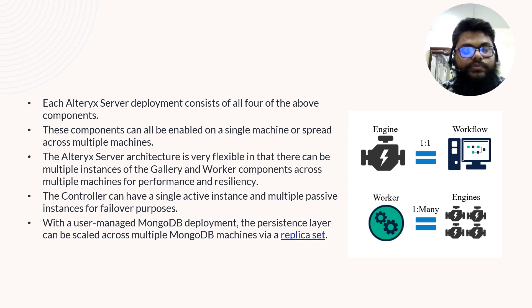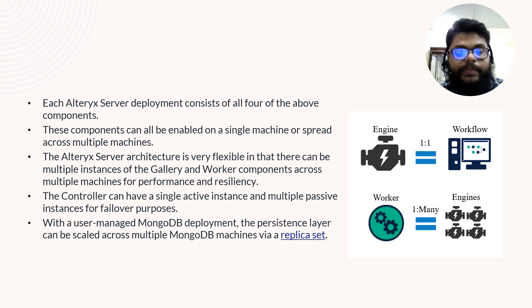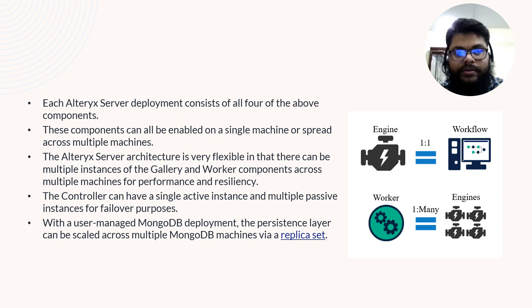Next, let's look at the Controller. For one server there will be one active Controller. The Controller is like the active server — whenever we connect to Alteryx Gallery it must be available, otherwise all our workflows will fail. There will also be passive instances of the Controller set up for failover purposes. For example, if the active Controller goes down, the passive Controller should be up and running so that workflows are directed to it without disturbing any running jobs.